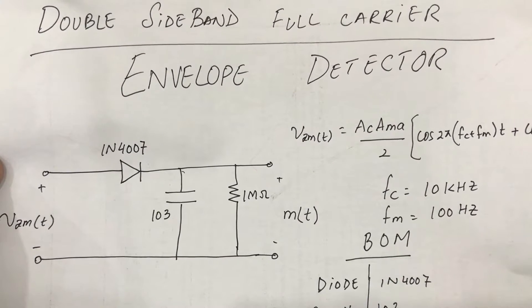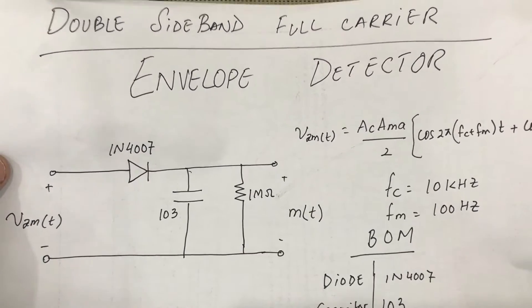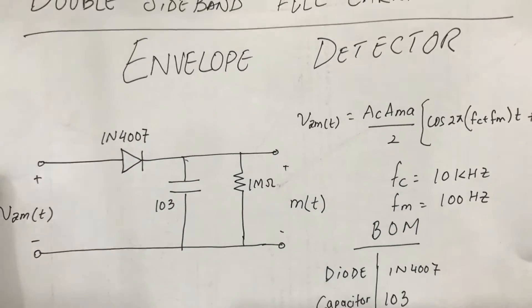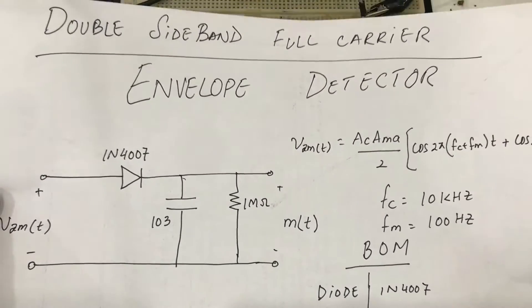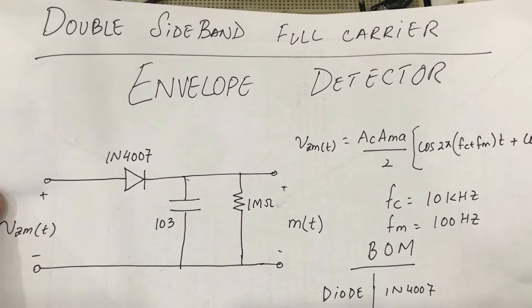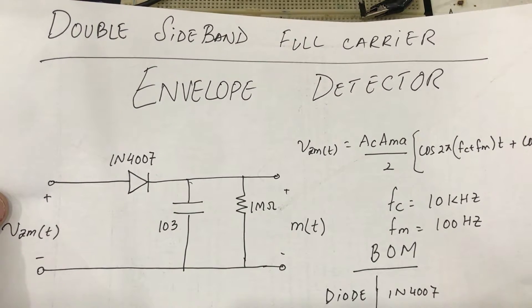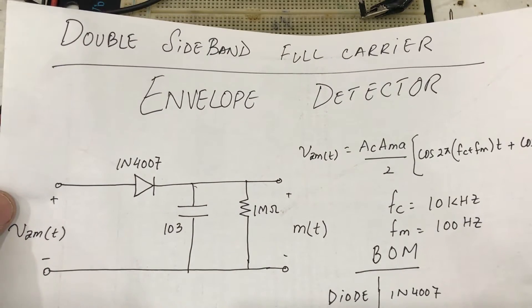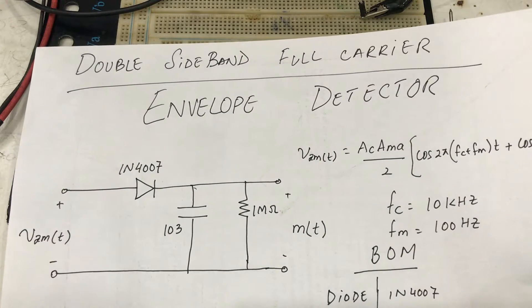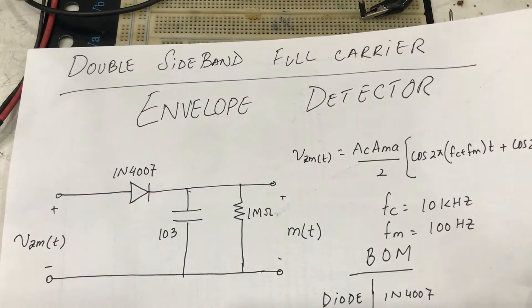Where do I use this circuit? It's a very simple and easy circuit, and I just made it on my breadboard. We normally use this envelope detector circuit to demodulate double sideband full carrier signal — or double sideband large carrier signal — where a carrier is present along with the upper sideband and lower sideband. This is probably the easiest receiver you can design for a modulated signal.